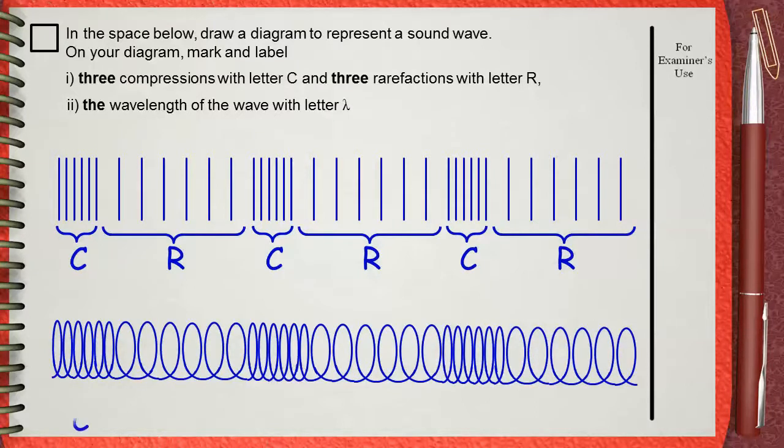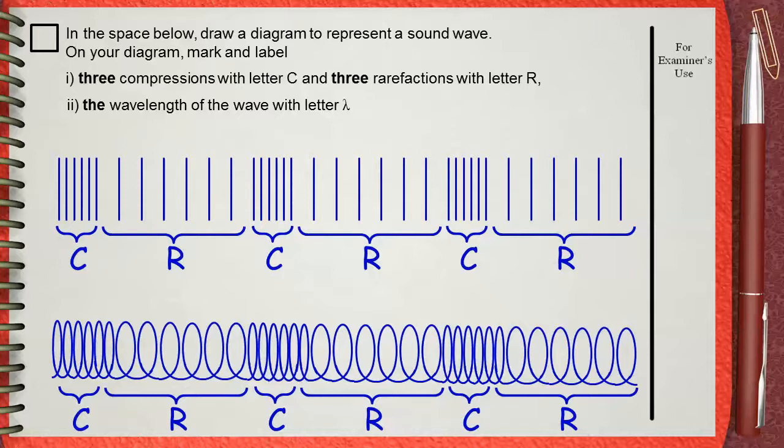Here are three compressions, where turnings of the coil are closer to each other. And these are the rarefactions, where turnings of the coil are far apart from each other.